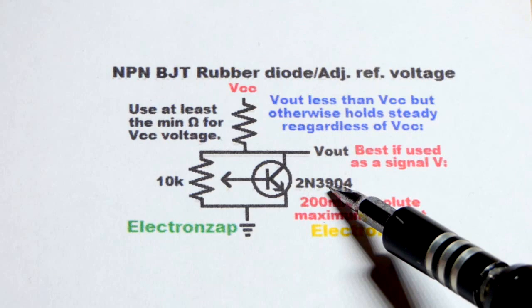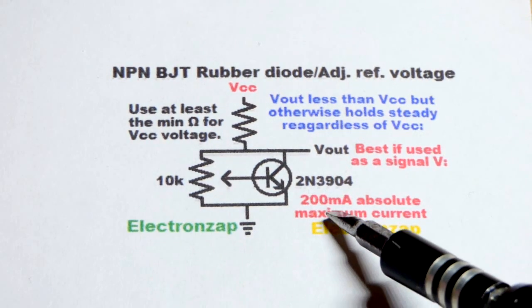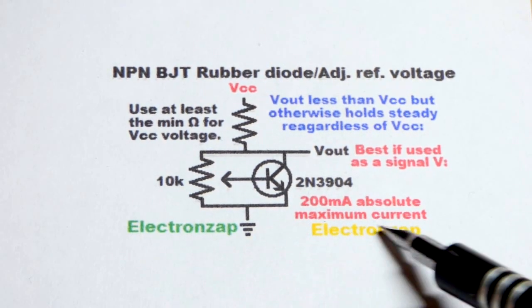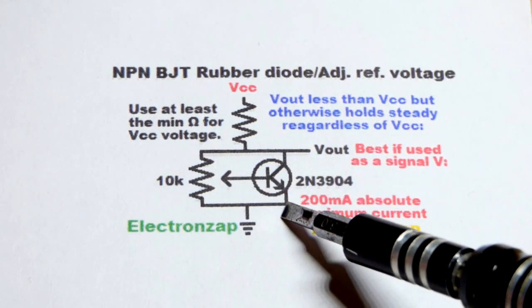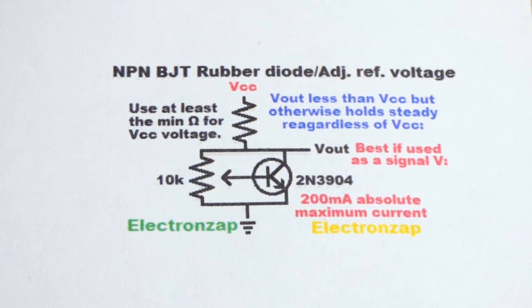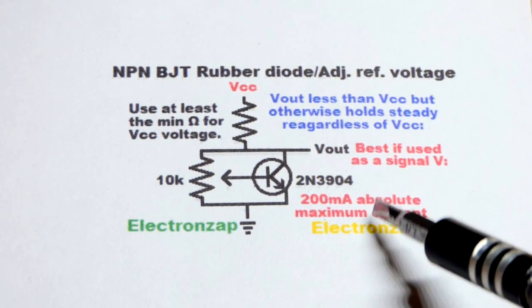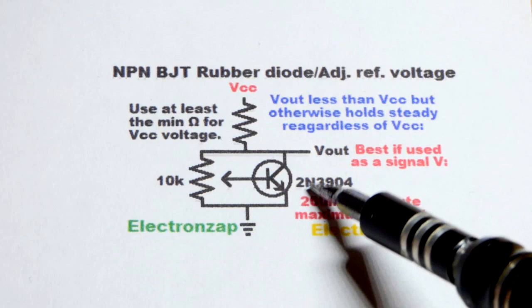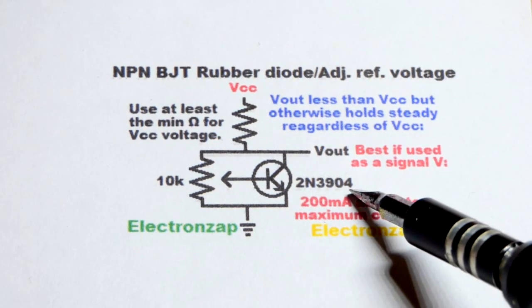200 milliamps is the absolute maximum current you allow from collector to emitter. There's a wattage, so you may have to hold that down also. That's absolute maximum, you should hold it down anyways. Just keep in mind you probably want to keep a 2N3904 under 100 milliamps to be safe.